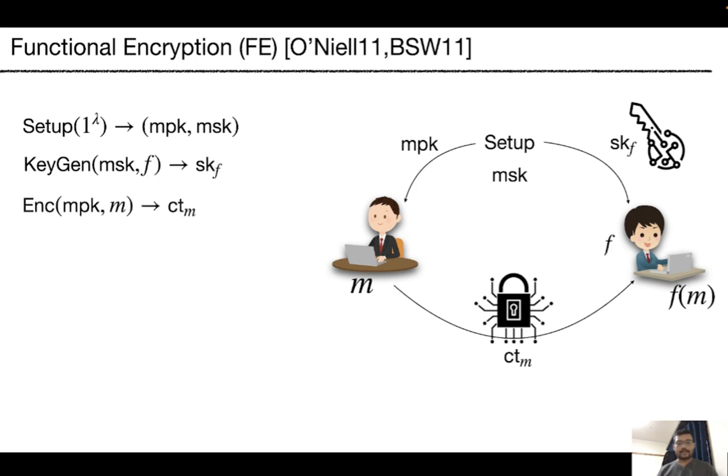Using MPK, a data owner encrypts his or her data and publishes the ciphertext CTM corresponding to the message M. Finally, a user decrypts CTM using the secret key SKF and learns the function of the message M, F of M.